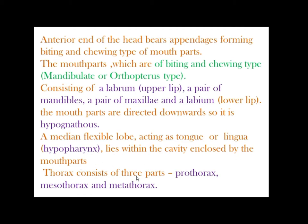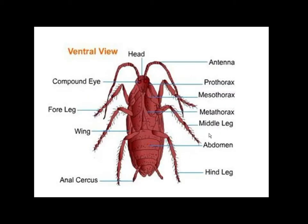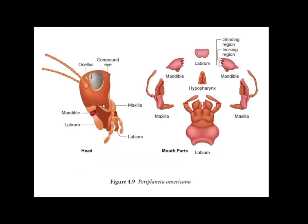The thorax consists of three parts: prothorax, mesothorax, and metathorax. The head is connected with the thorax by a short extension of the prothorax known as the neck. The mouthparts of the head region include labrum, mandible, hypopharynx, maxilla, and labium.